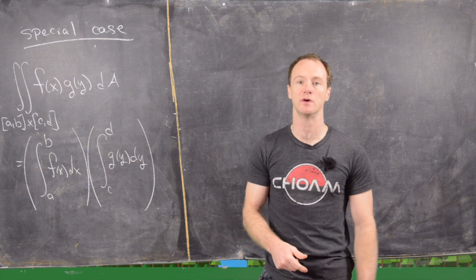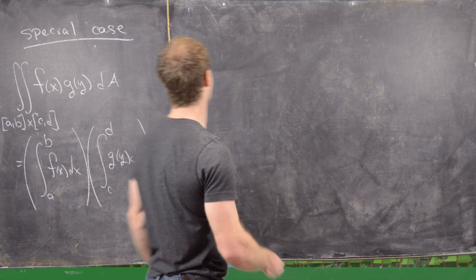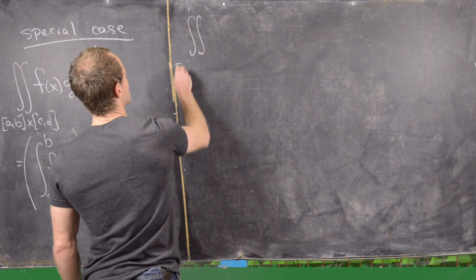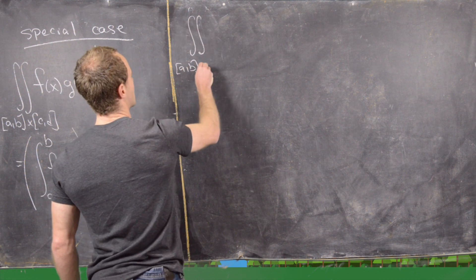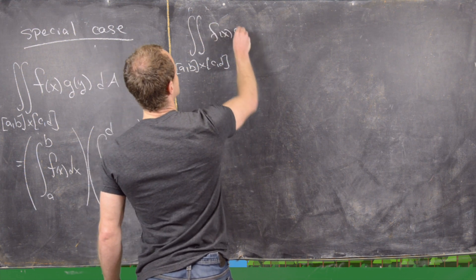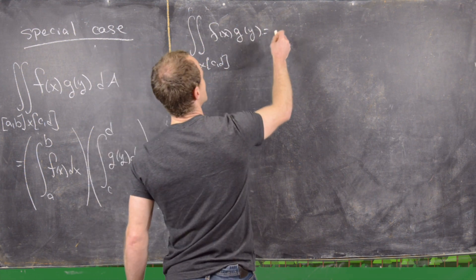In this case, you can factor this into just two single integrals. So let's go ahead and look at the reasoning for that. Let's say we've got this double integral over the rectangle [a,b] × [c,d] of f(x) times g(y).